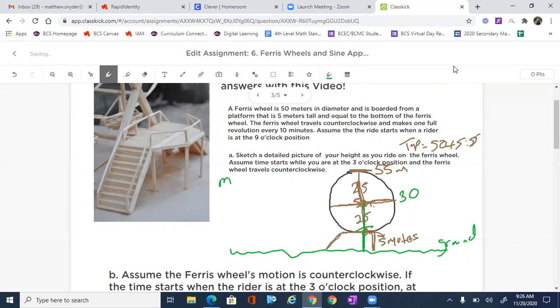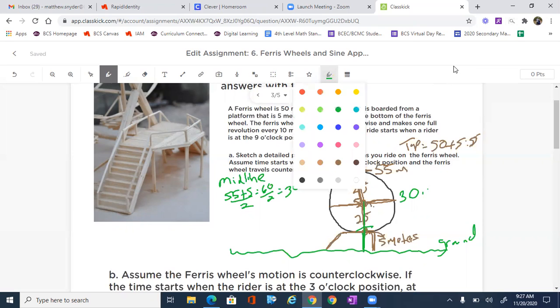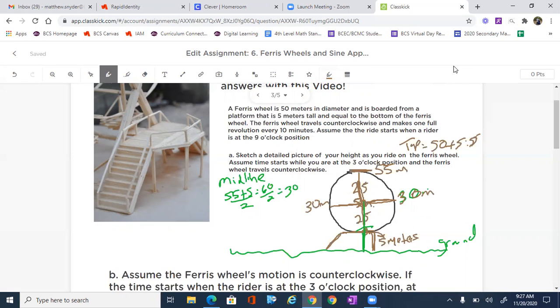The other way to find the midline is just to say 55, the top plus the bottom, which is 60. And then we cut that in two, which is essentially 60 divided by two is 30. So our height is 30 meters here at the 30 meters. And then this is also 30 meters.